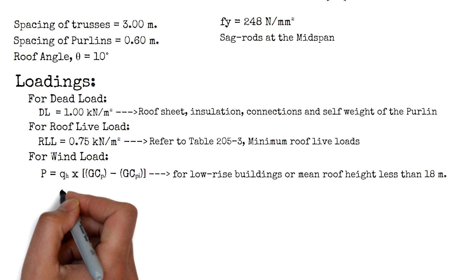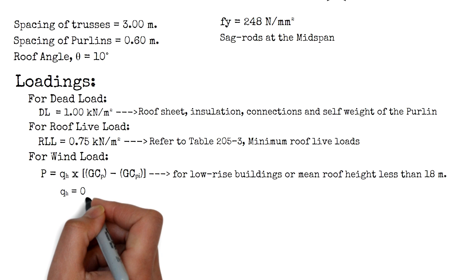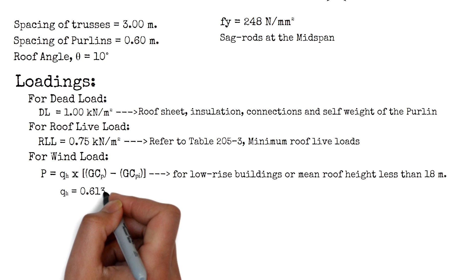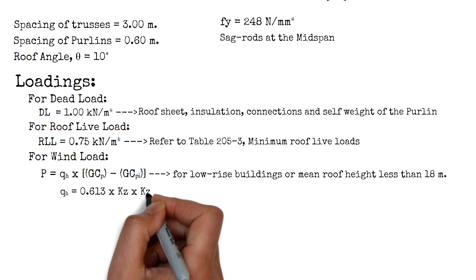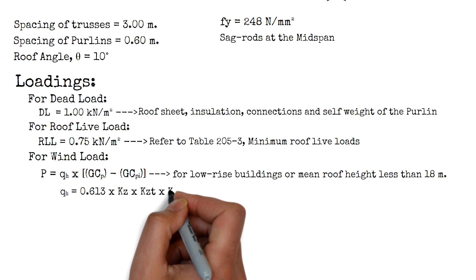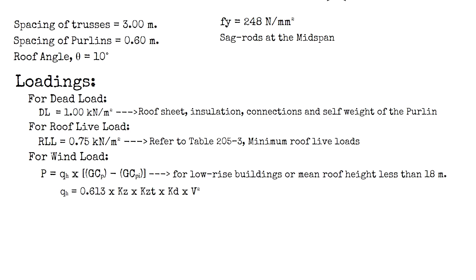Where the velocity pressure Q_H equals 0.613 times the velocity pressure exposure coefficient K_Z, times the topographic factor K_ZT, times wind directionality factor K_D, times the square of the basic wind speed. You may also calculate the wind pressures using the STOD Pro wind load calculator, which is the easiest way and the one we will be using for this design.